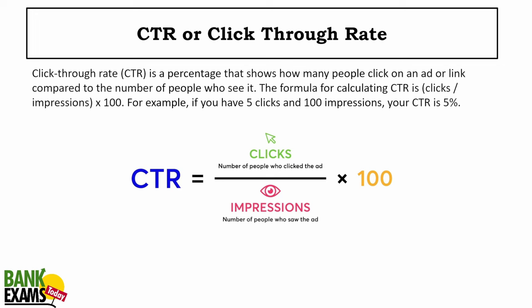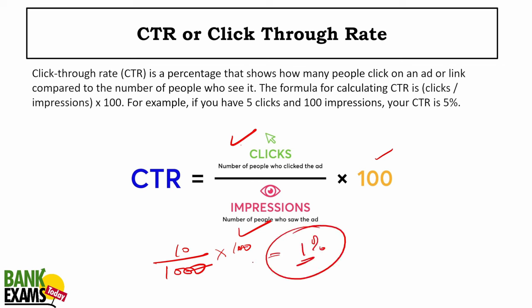Click through rate (CTR) is the number of people who clicked an ad divided by the total number of impressions multiplied by 100. For example, if 1,000 people saw the ad and only 10 clicked it, your CTR is 1%.